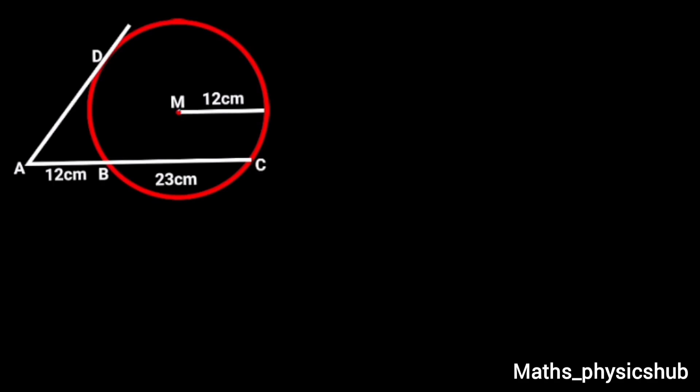In this figure, the circle has a radius of 12 cm, the length of line AB equals 12 cm, and BC equals 23 cm.